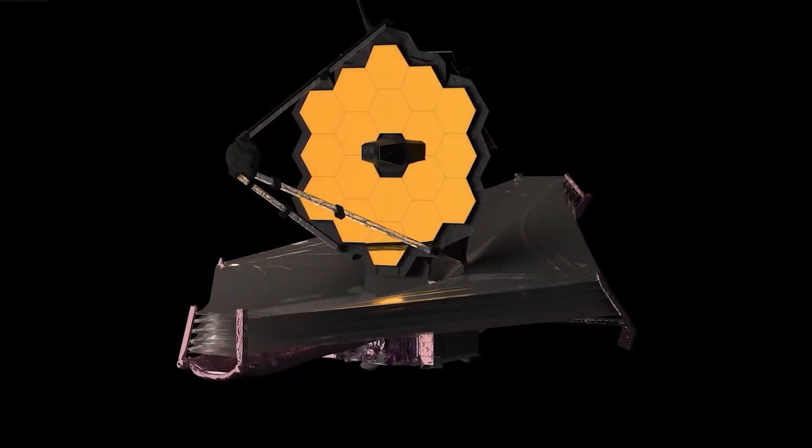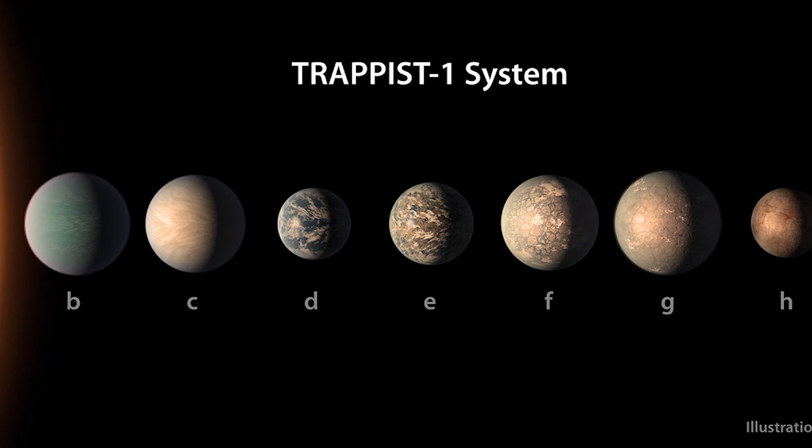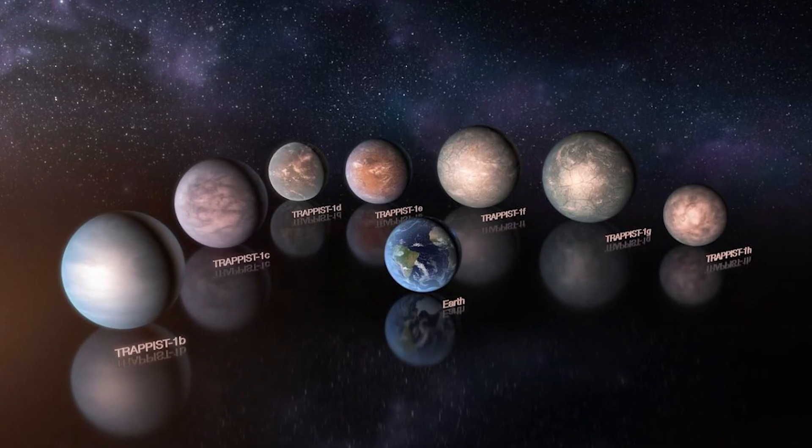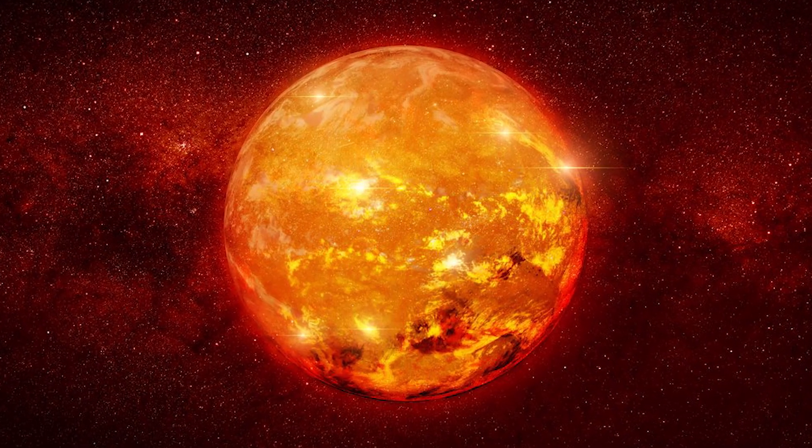JWST's initial mission was to examine the TRAPPIST-1 planetary system around 40 light years from Earth. It's made up of about seven rocky planets that are about the same size as our planet Earth, around a red dwarf star in the habitable zone.